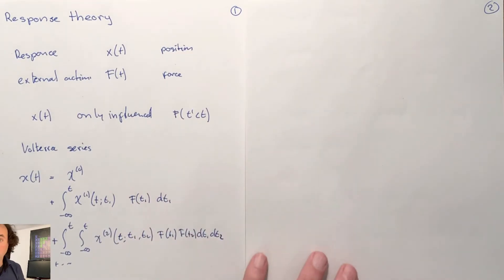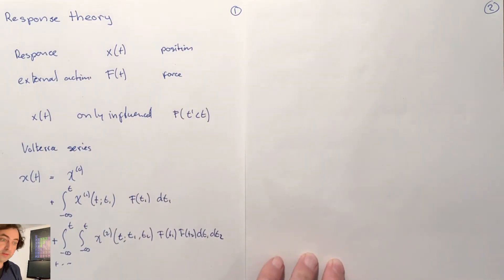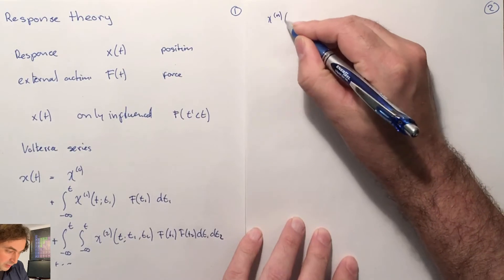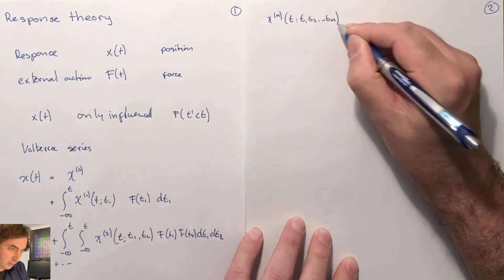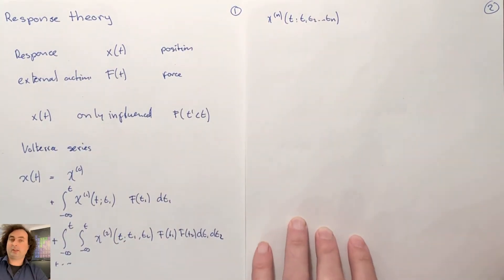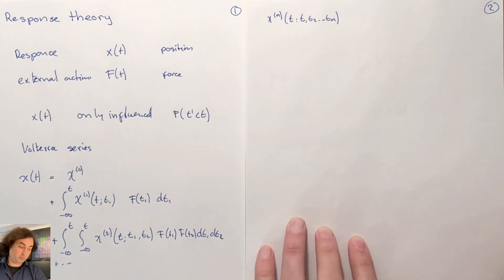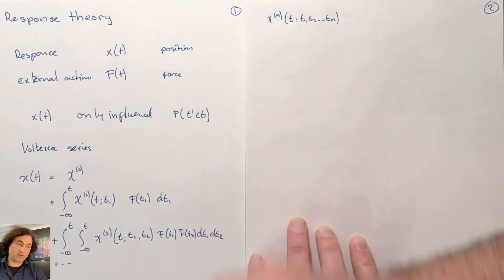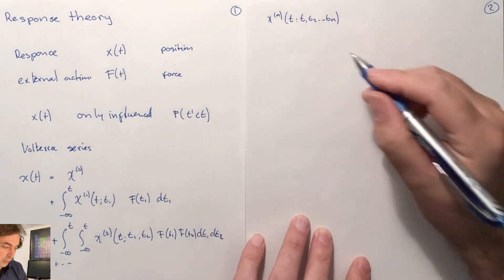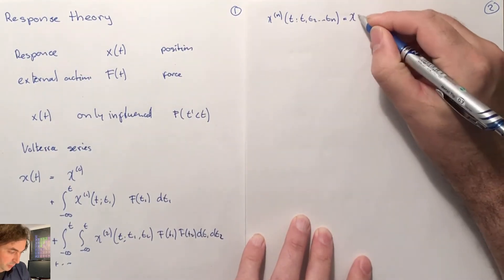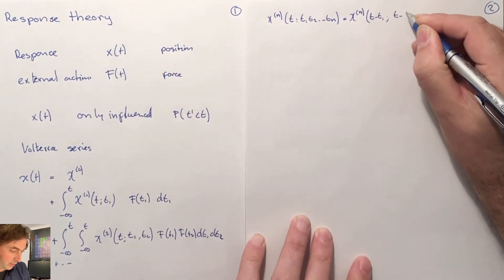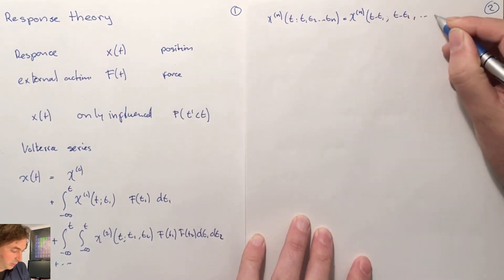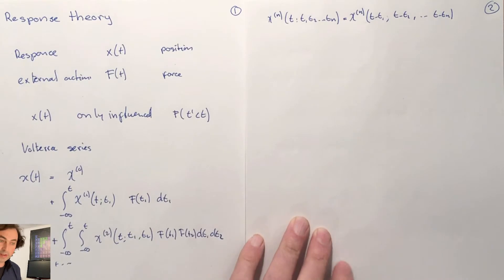Our response functions, or susceptibilities — the zeroth order, the first order, the second order, up to the nth order — depend on the time that we measure and then the times that we applied the forces. For a system that is invariant under time translation, which most of our systems are — it doesn't matter if you do an experiment today or tomorrow — you're only allowed to be sensitive to the time difference between the time that you measure and the time that you applied the force. So here we have t minus t1, t minus t2, up to t minus tn for an nth-order response function.